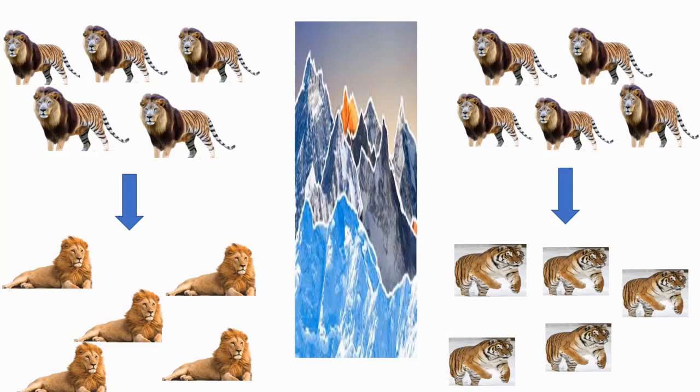On the right those ligers evolved differently. They lost other features. They kept the stripes but they lost other features of the original population and they gained new ones.